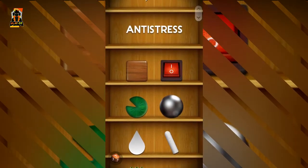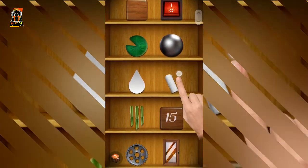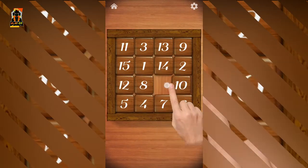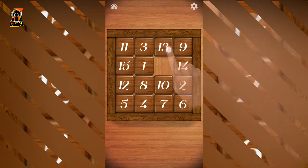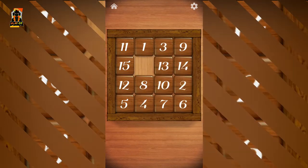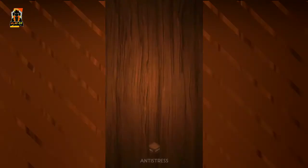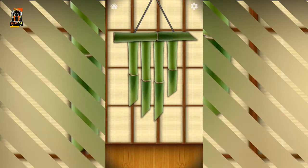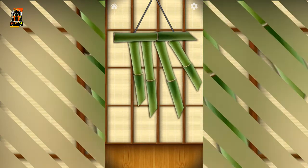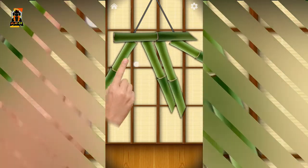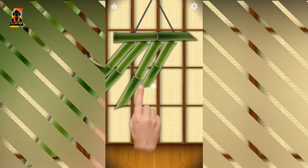So our next game is a puzzle. Let's try to solve it. Just one, not all, just one. Okay, we are solving. It's a bamboo. It's a bamboo. The sounds are really so good. I think it's a Japanese object.